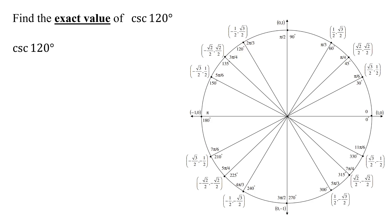So in this case, I need to find the cosecant of 120 degrees. Now remember, the cosecant function is just 1 divided by the sine function. So the cosecant of 120 degrees is just 1 divided by the sine of 120 degrees.